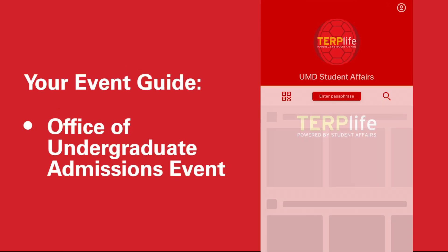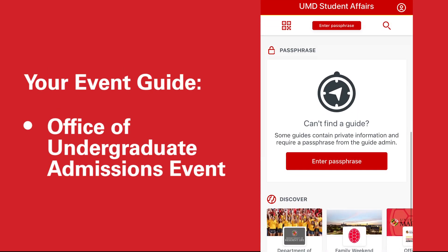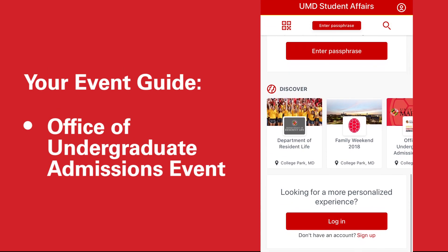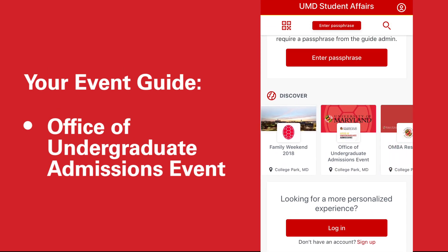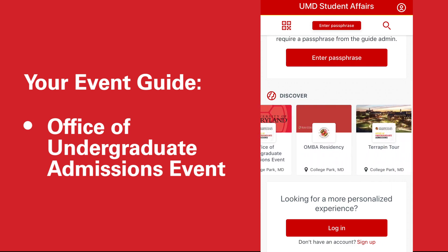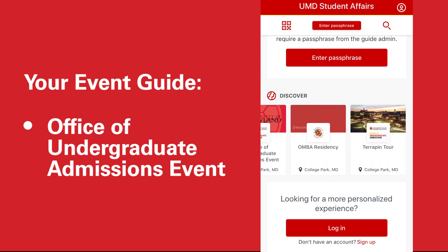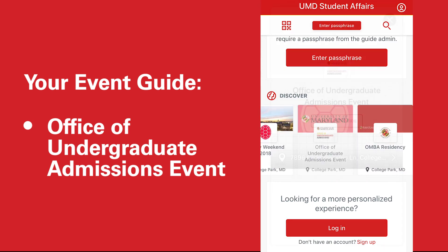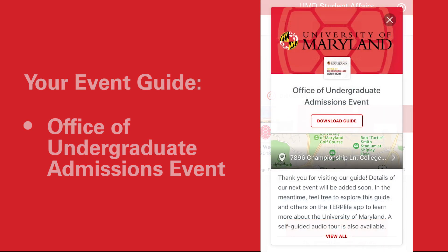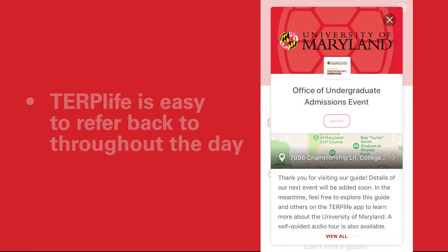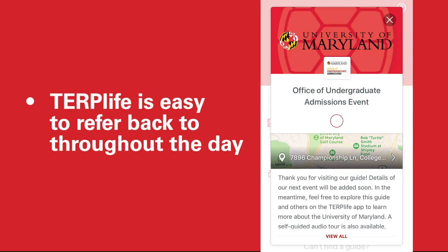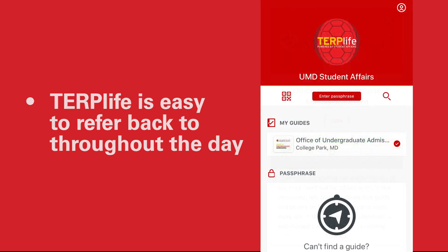Within the TerpLife app, you can find the guide for your event in the Discover section, or by simply searching for it. Once you download the guide, it will appear in the My Guide section of the app, so you can easily refer back to it throughout the day.